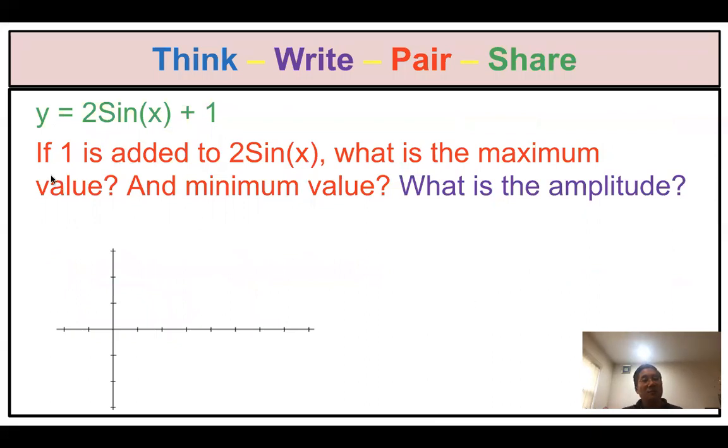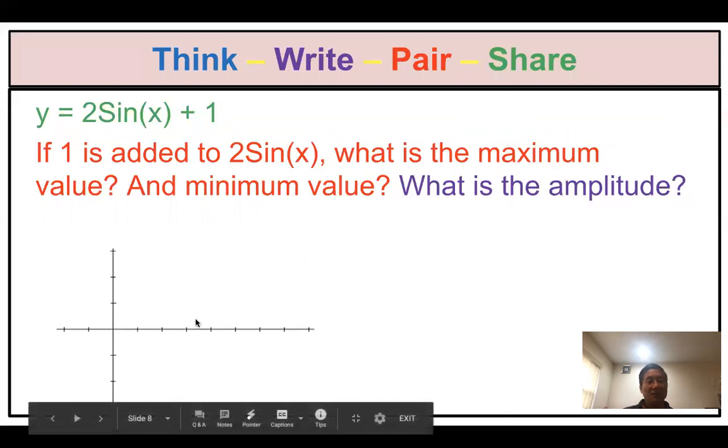Let's see one example. If one is added to 2sin(x), what is the maximum value and the minimum value? What is amplitude? Can you think about it? But I already mentioned, right? When you add one, what happened? So now I want you to go to Google Classroom and answer this question. I will give you a hint. The whole center line from here goes up by what? This number one.